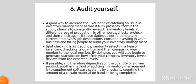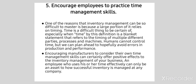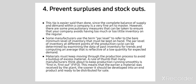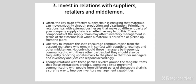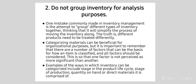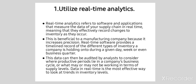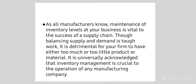I hope these points are clear. To conclude this session, the major points are: audit yourself, encourage employees to practice time management, prevent surplus and stockouts by avoiding understocking and overstocking, invest in relations with intermediaries in the supply chain, do not group inventories unless they fall under certain criteria, and utilize real-time analytics — the use of software which helps manage time and efficiency. These are the criteria by which the right inventory can be judged. Thank you all.